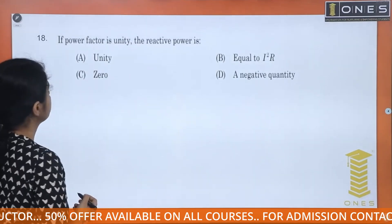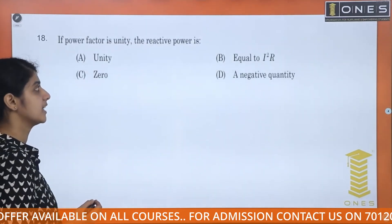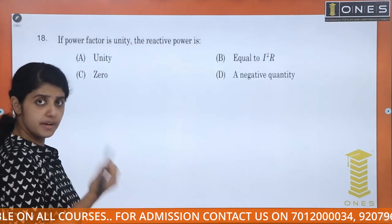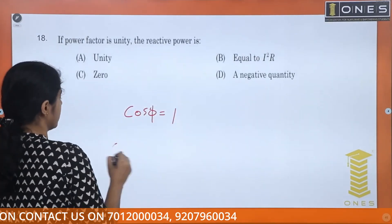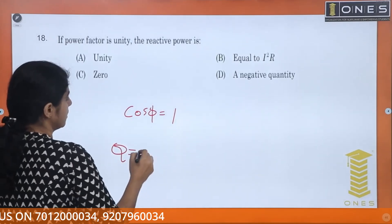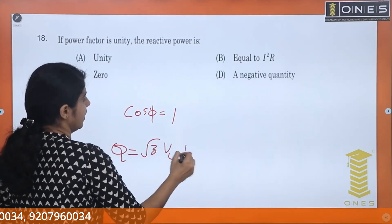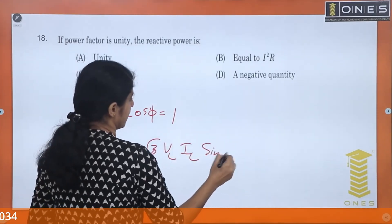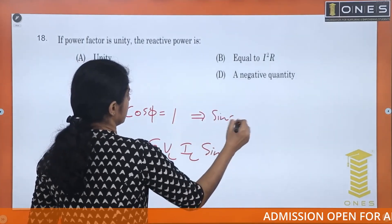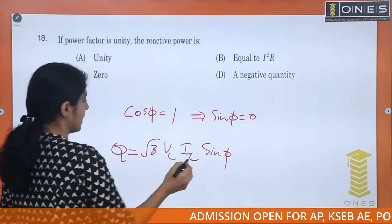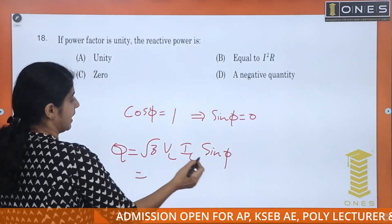If power factor is unity, reactive power is? Power factor is unity means cos phi is 1. We have reactive power as root 3 VL IL sin phi. Cos phi is 1, so sin phi is 0. The reactive power is root 3 VL IL times 0.